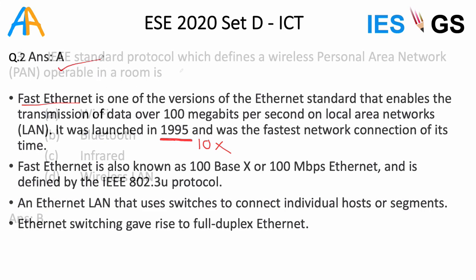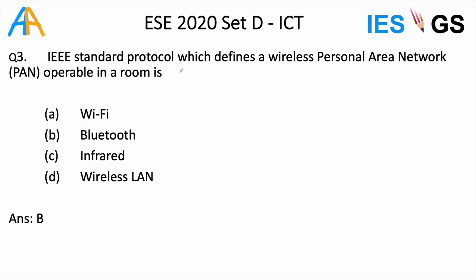The next question asks about the IEEE standard protocol which defines wireless personal area network (PAN) operable in a room. We have seen different IEEE standards defining Wi-Fi, Bluetooth, etc. A personal area network covers only a few meters, within the dimensions of a room. Wi-Fi is not designed only for PAN as it can be used for LAN also. Bluetooth is specially for PAN because its range is less. Infrared covers longer distances, so the answer is B — Bluetooth. This is a relatively easy question.